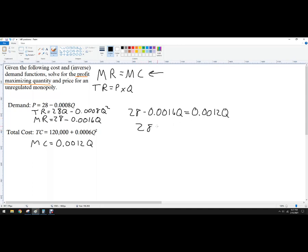So I get 28 equals 0.0028q and I'm going to divide both sides by that 0.0028 and I get q equals 10,000. So that is the quantity. This is the profit maximizing quantity that the firm should produce.